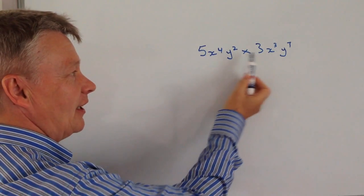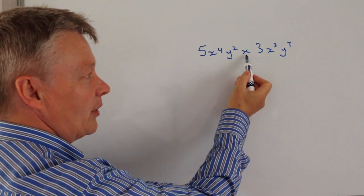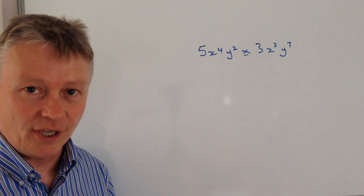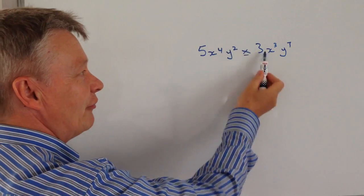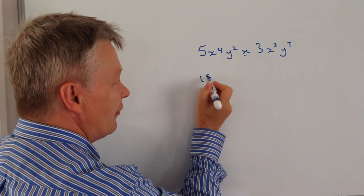So we've got five here and a three here, and we're going to be multiplying these two terms together. So we can say five times three is fifteen,